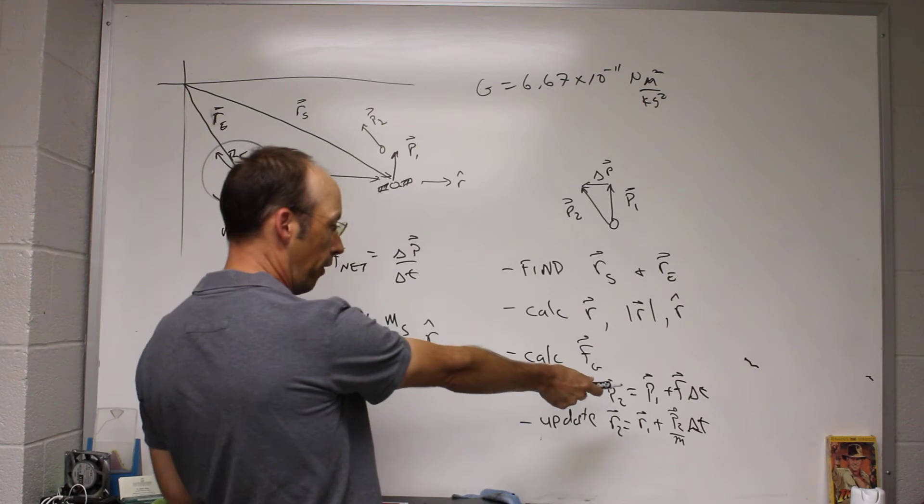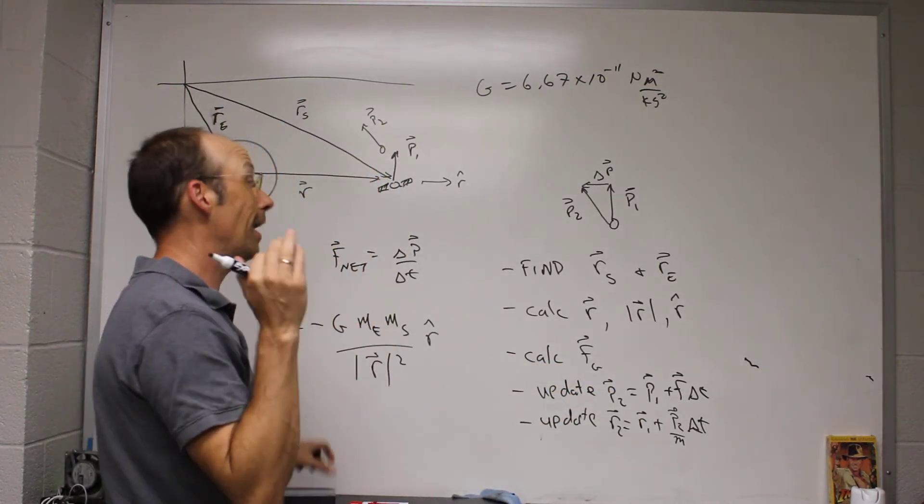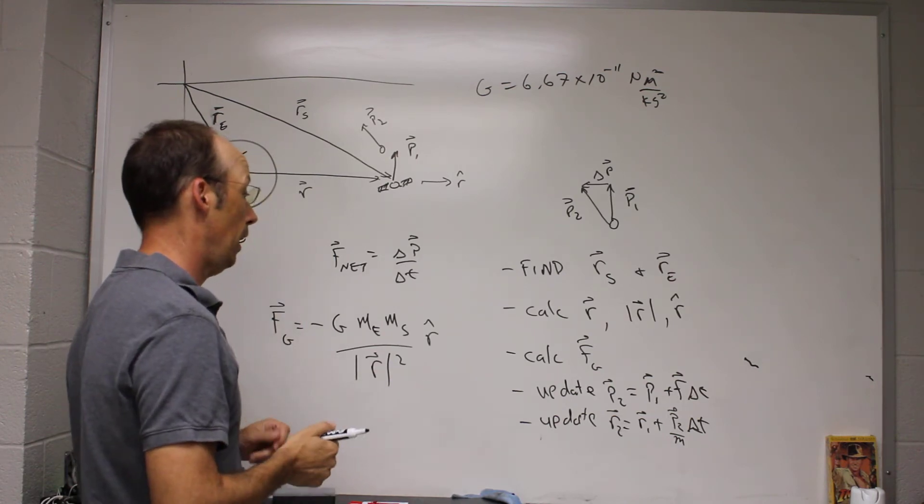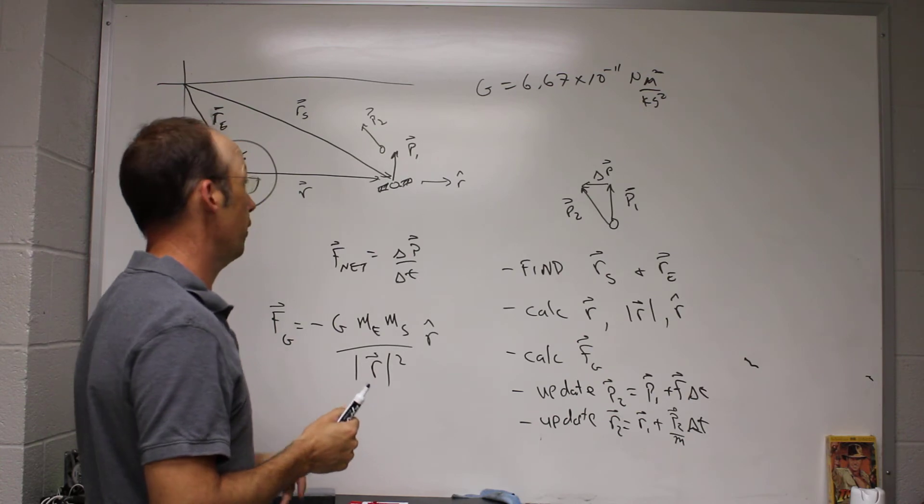Okay, and that's that cheating part, right? Because I'm using the momentum after I calculated it here for the average velocity, which is wrong, but not too terribly wrong. And then I can keep doing this and model the motion of this satellite around the Earth.